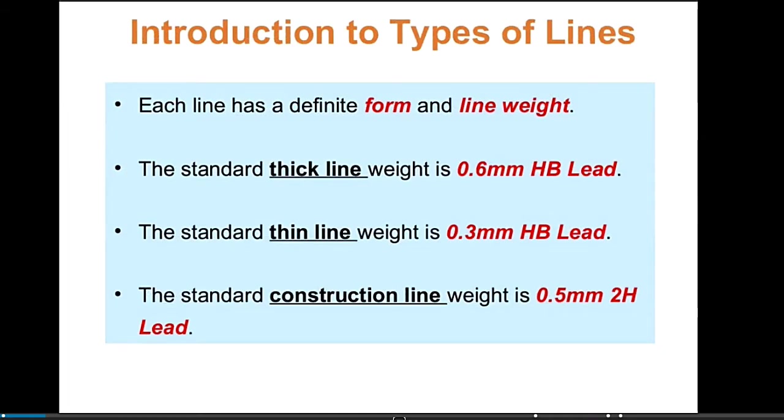We have thick and thin lines. We need to observe which ones to use when drawing. Like this, for thick lines used as object lines, we use 0.6 millimeter. That's a large 0.6 diameter when drawing, while standard thin line is 0.3.